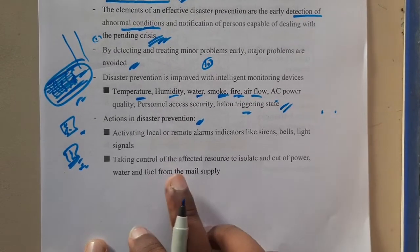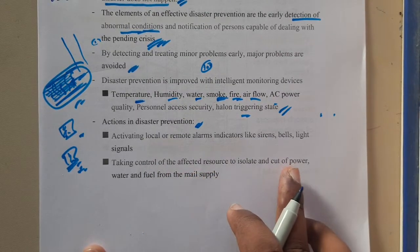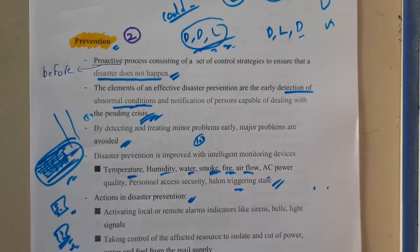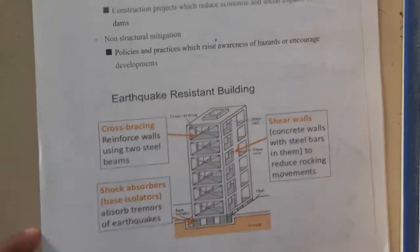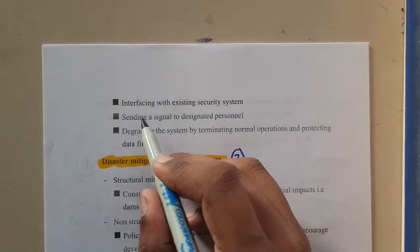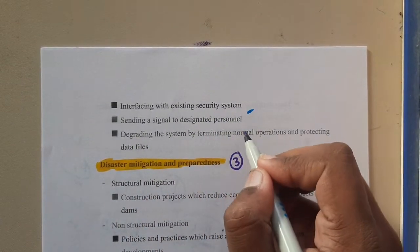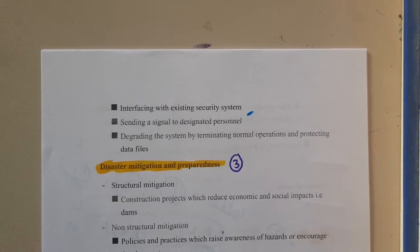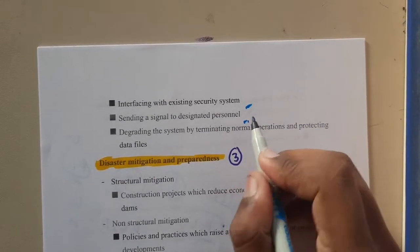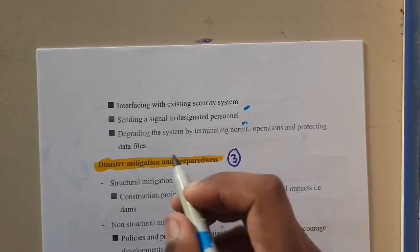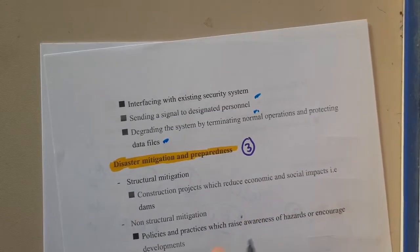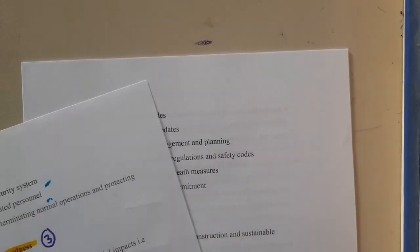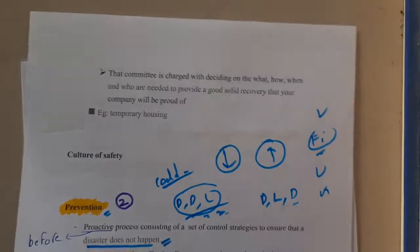Another action is taking control of affected resources — isolating and cutting power, water, and main supply in the event of a fire accident or similar emergency. You should also interact with the existing security system to understand what went wrong for future reference, and send signals to the desired people. Normal operations and data files should be sent to everyone involved.